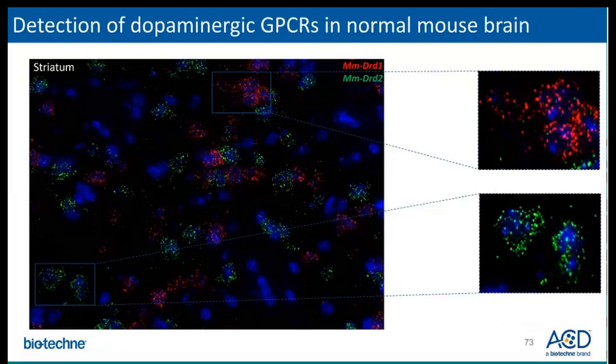For many GPCRs, there are either no antibodies available or no reliable antibodies available, so detection in the tissue context can be limited. Dopamine receptors are implicated in many neurological processes, including motivation, cognition, and memory. Here we demonstrate the detection of two distinct neuronal populations marked by the GPCRs DRD1 in red and DRD2 in green in the striatum using the RNAscope fluorescent multiplex assay.